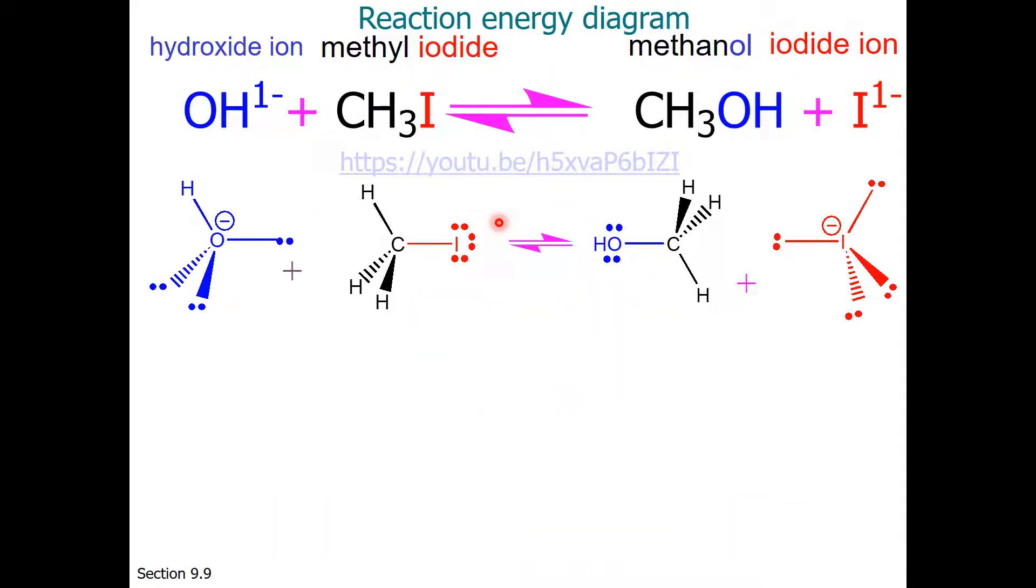We're going to start with a very simple reaction. It's reversible, and this is hydroxide ion reacting with methyl iodide to make methanol and iodide. There are some specifics to the reaction in which the hydroxide must come in exactly opposite the carbon-iodine bond. When it does so, it kicks the iodine out to make the iodide ion and forms a carbon-oxygen bond. Here's a short animation that helps you understand what's going on in the reaction.